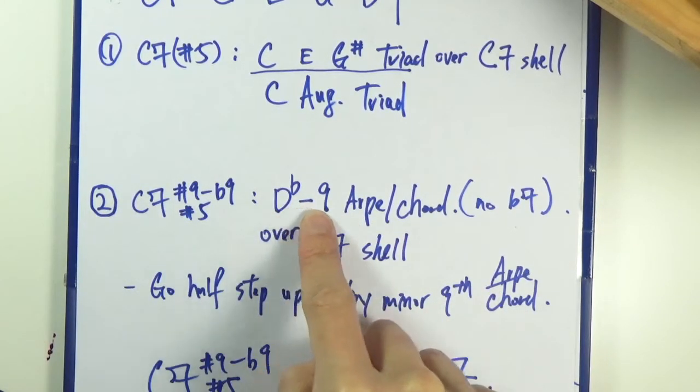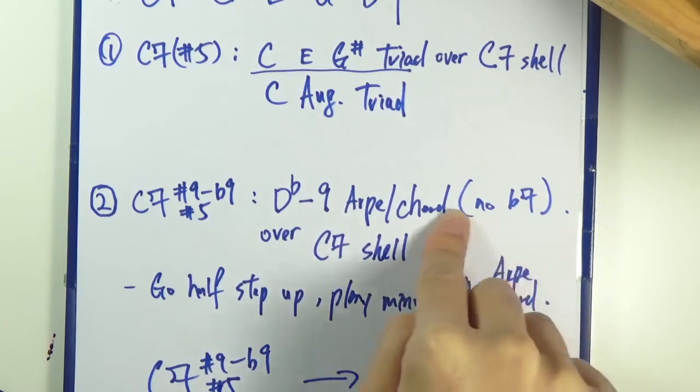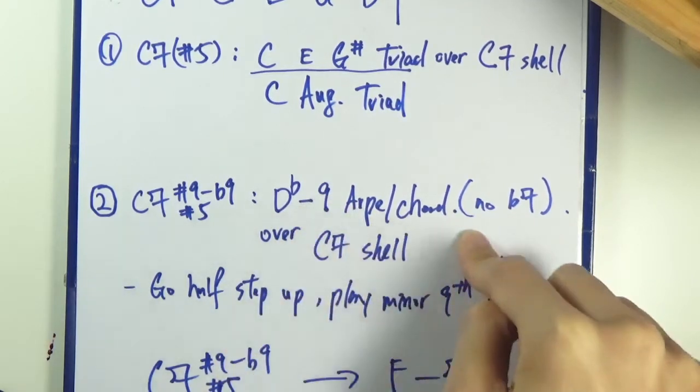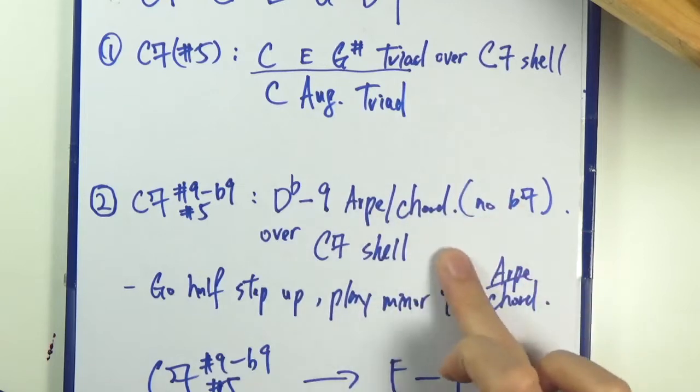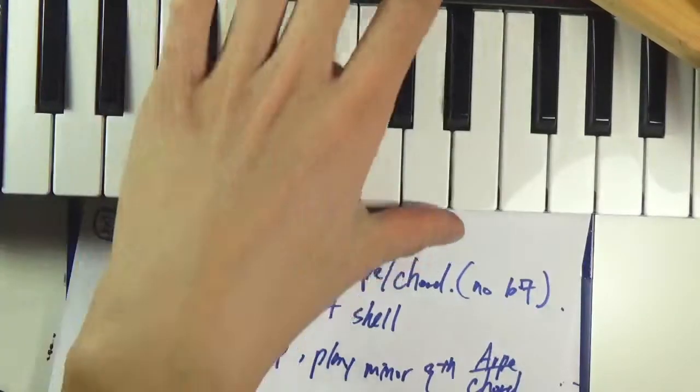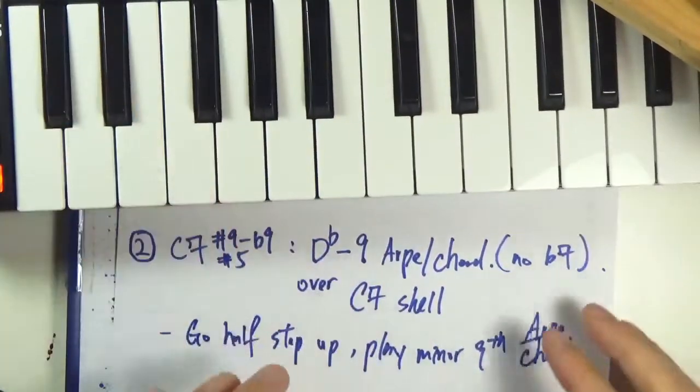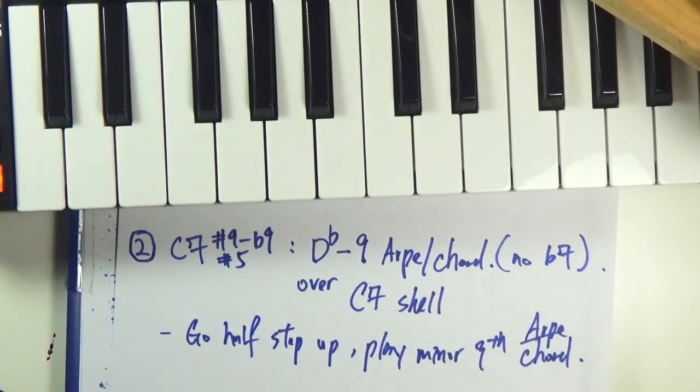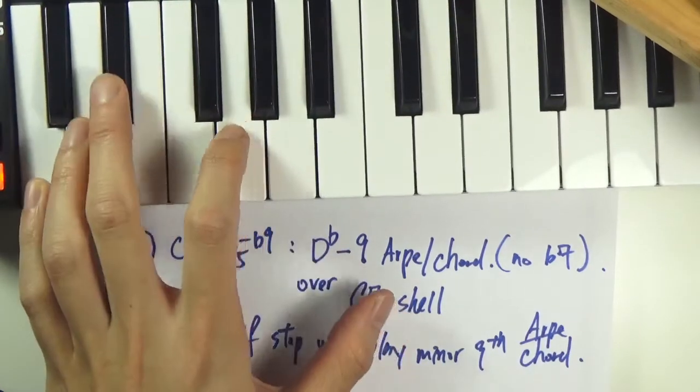No flat seven, we'll be skipping the flat seven. We play this over the C7 shell or a C bass note. So let's check it out. What I'm going to do is I've already recorded a C bass. Let me try it out first here. C, okay.